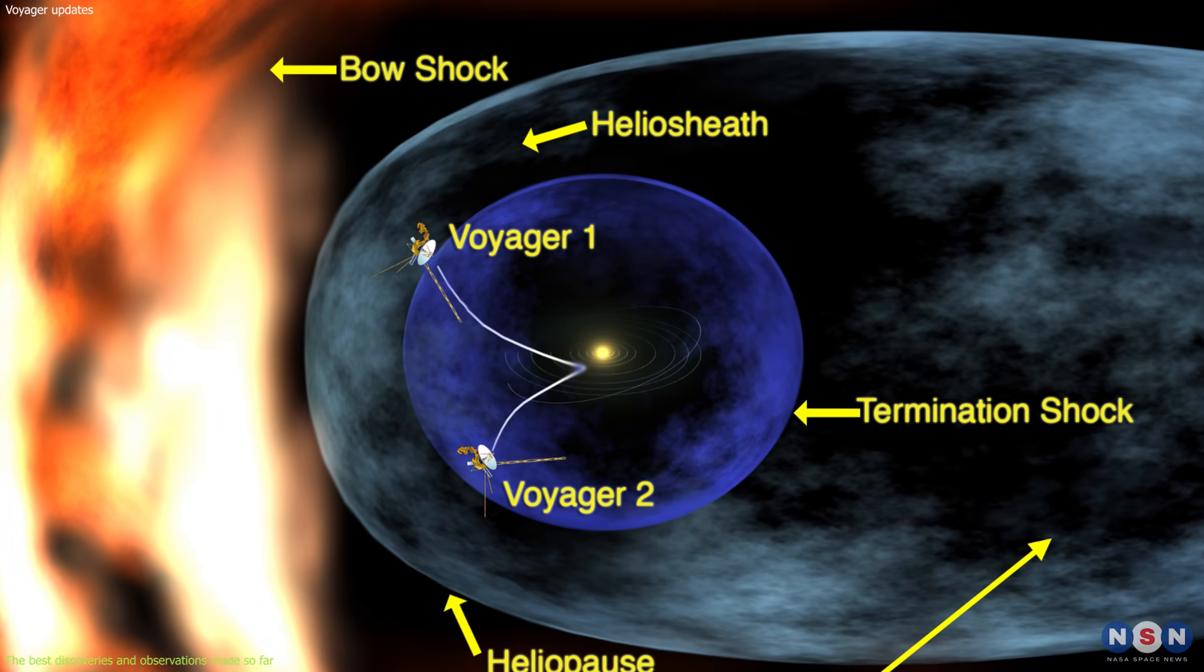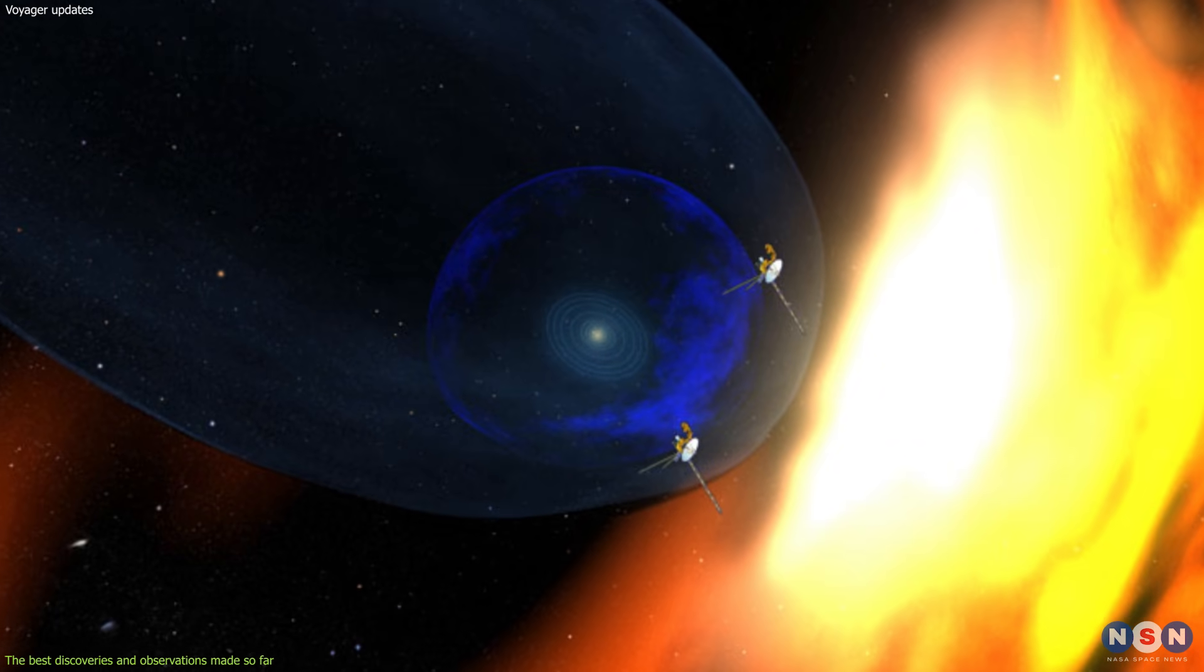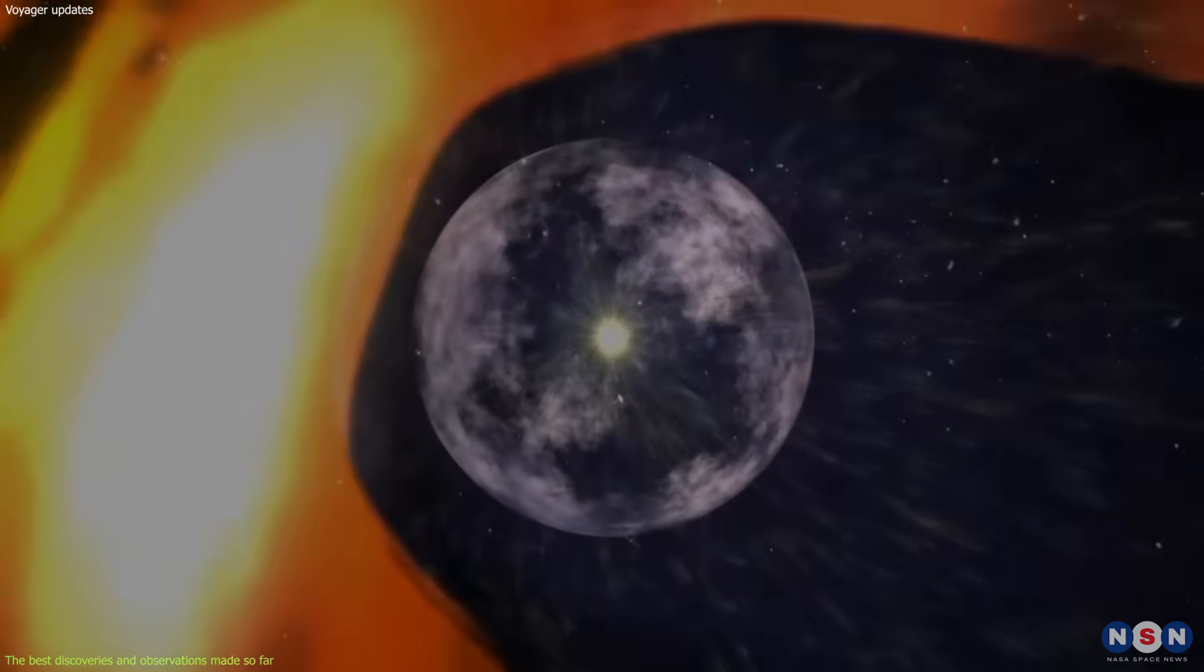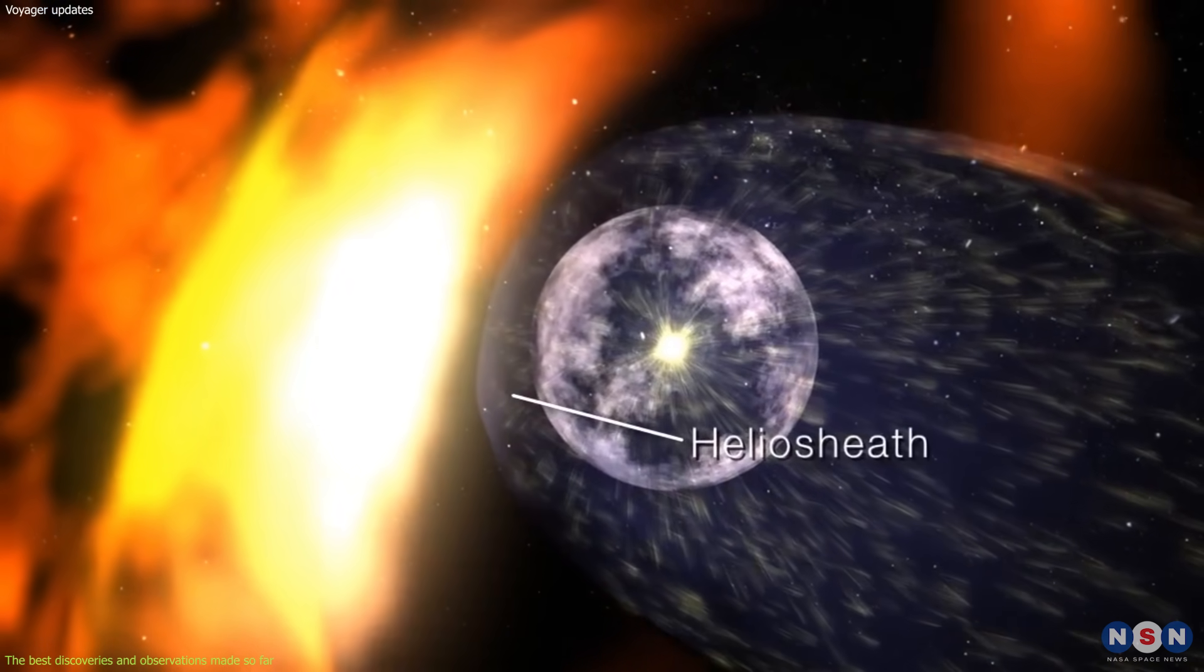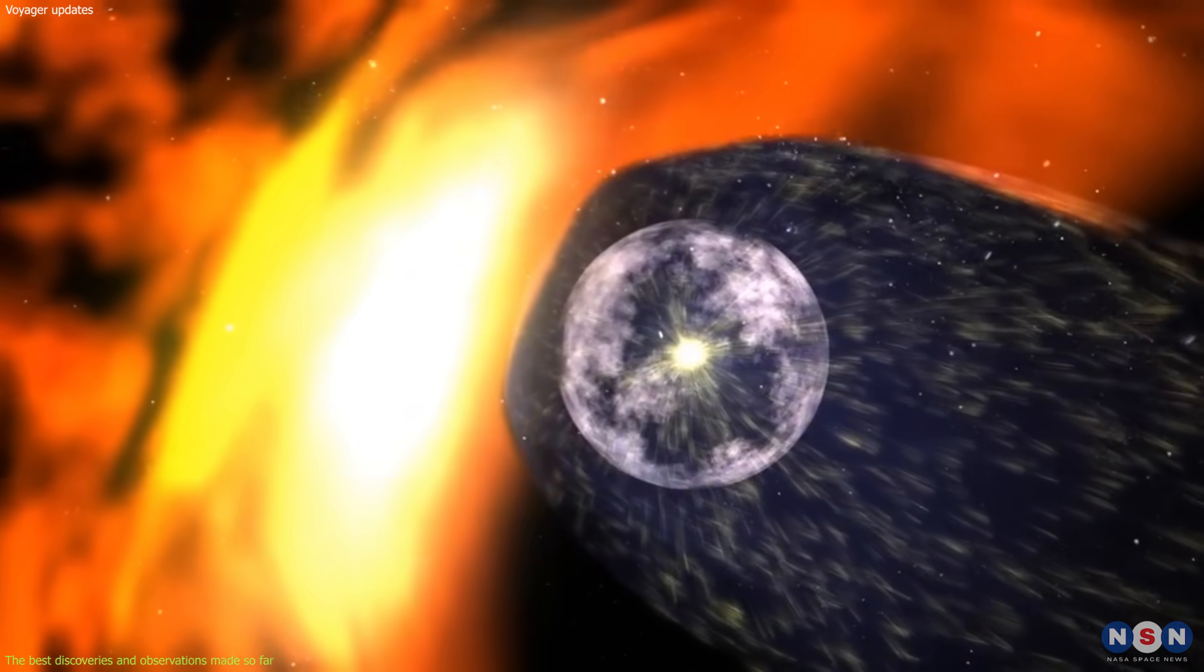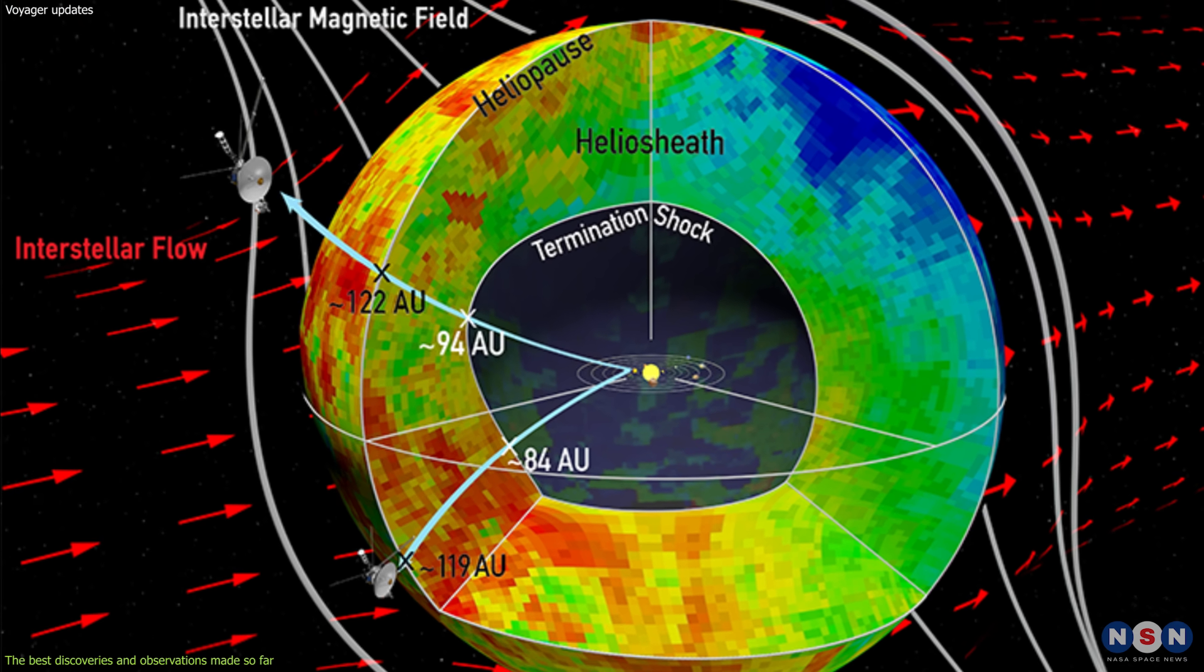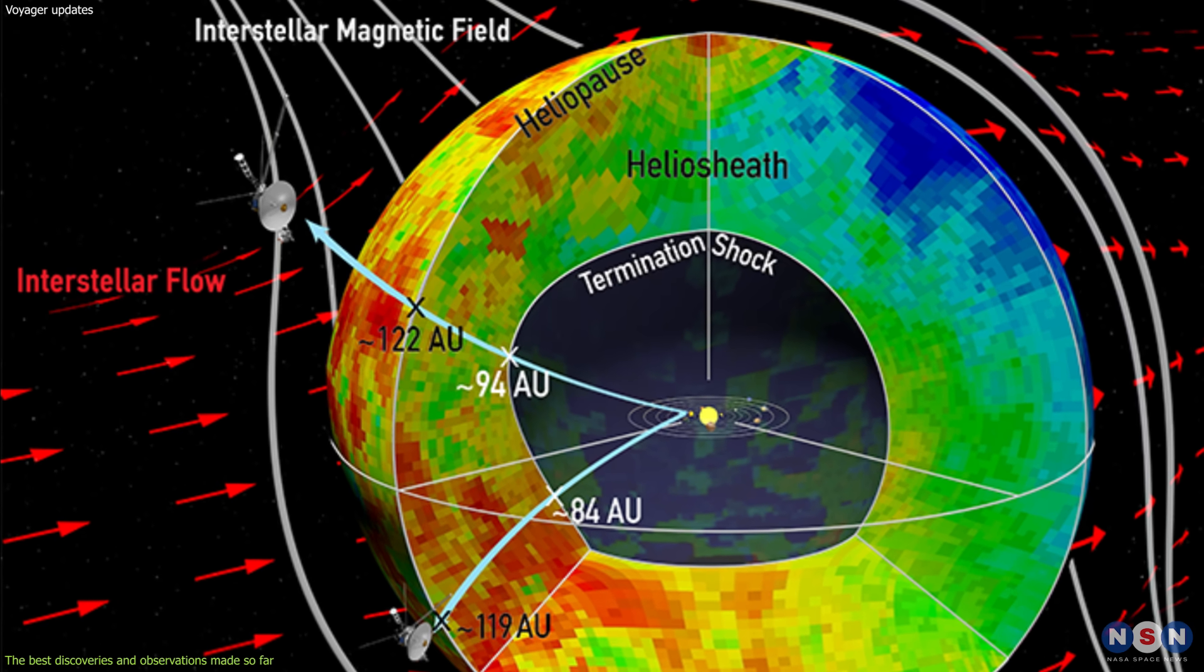Then they crossed the termination shock, the heliopause, and the bow shock, which are the boundaries of our solar system's interaction with the interstellar space. These boundaries mark the transition from the region where our sun's wind dominates to the region where the interstellar wind dominates. They also mark the transition from the region where our sun's magnetic field dominates to the region where the interstellar magnetic field dominates.